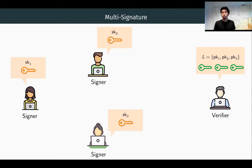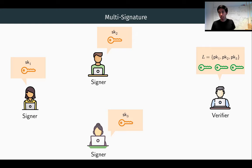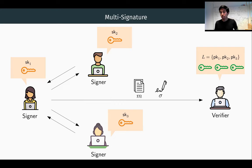So what is a MOTS signature? A MOTS signature is a generalized version of the user signature scheme, where there are many different signers holding individually generated secret keys. The parties interact with each other, and after some back and forth, they produce a single signature on the same message M. The verifier then takes a list of the public keys that participated in the signing operation and outputs reject or accept.